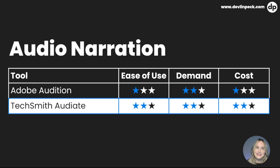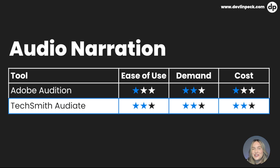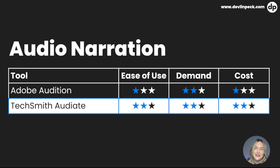The next audio tool is TechSmith Audiate — the last tool in the TechSmith package. It is neutral to use, neutral in demand — you don't see it a lot, but we are seeing it in some job descriptions. The cost is also neutral. It can be affordable depending on whether you want to purchase it by itself or as a group with the other TechSmith products, so you have to look at the ratings and decide what's best for you based on what sounds like the best use of your investment.